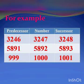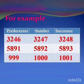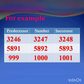Students, let's explore some more examples. The first number is 3247. The next number 3248 is its successor and the previous number 3246 is its predecessor. The second number is 5892. The next number 5893 is its successor and the previous number 5891 is its predecessor. The last example is 1000. The next number 1001 is its successor and the previous number 999 is its predecessor.